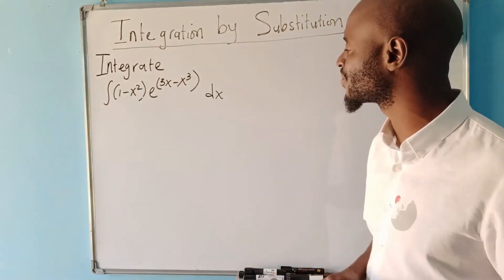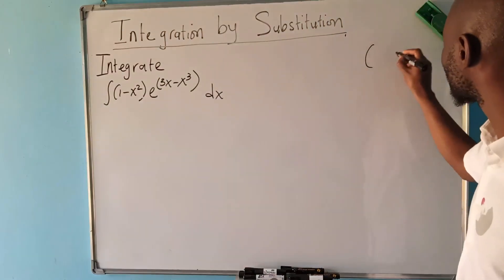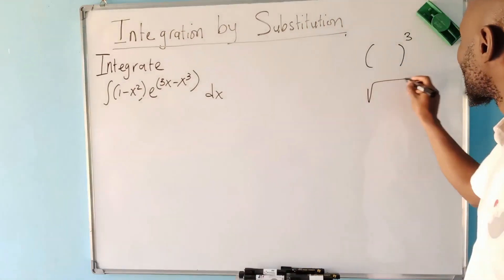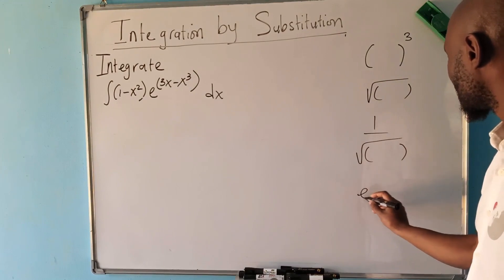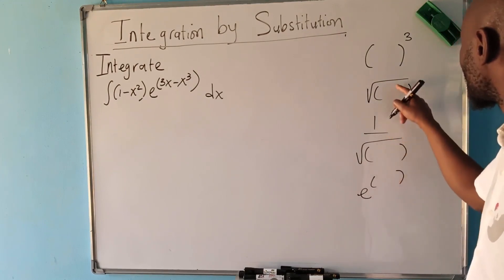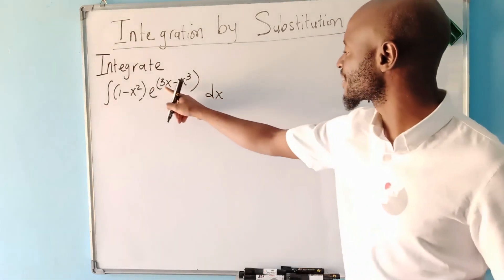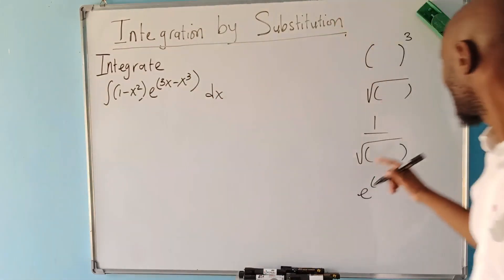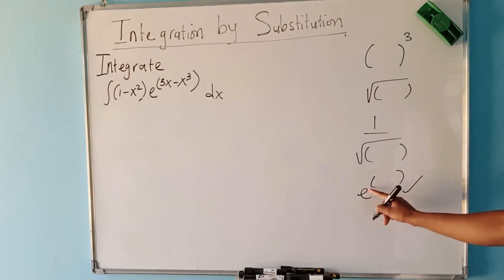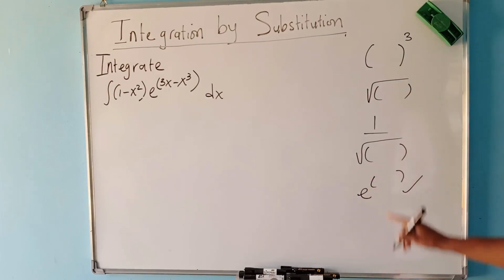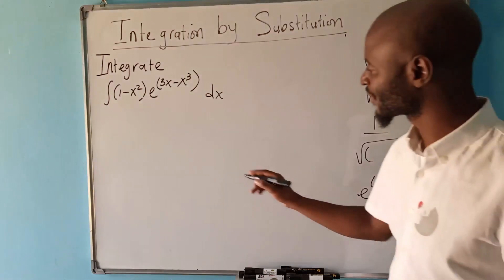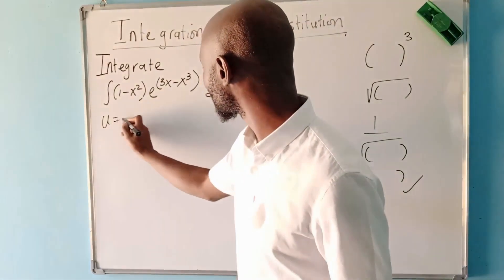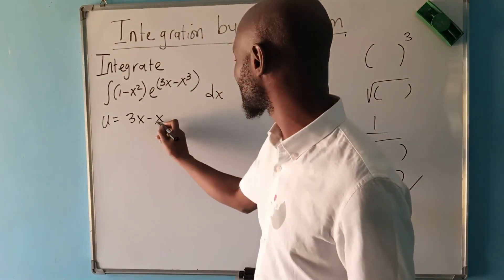How do you identify which one should be u? If you see something raised to a power, or something inside brackets, or e to the power something — these are the guys that you should make u. When you look at this, it's obvious that u can be this. We have to make this according to this statement here, because it's also going to be e to the power something. That is the one that you make u. So our u now becomes u = 3x − x³.